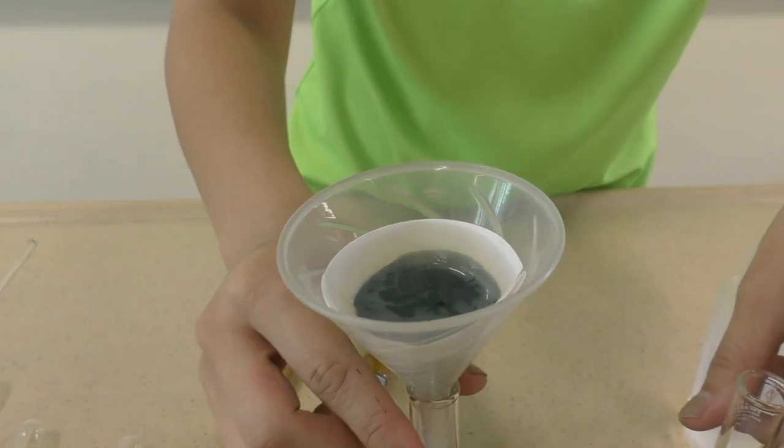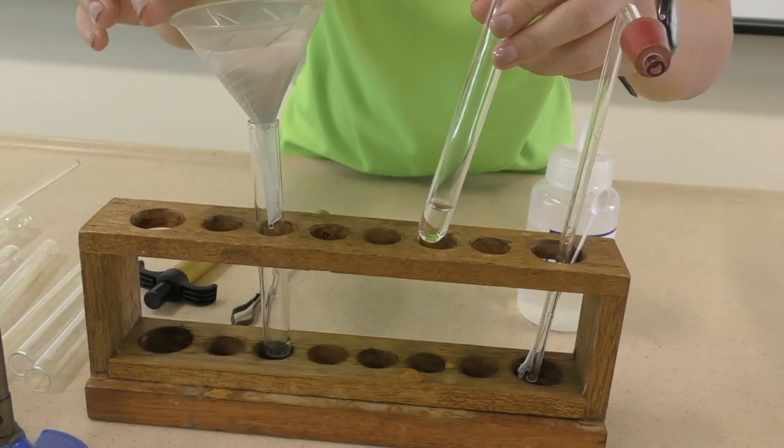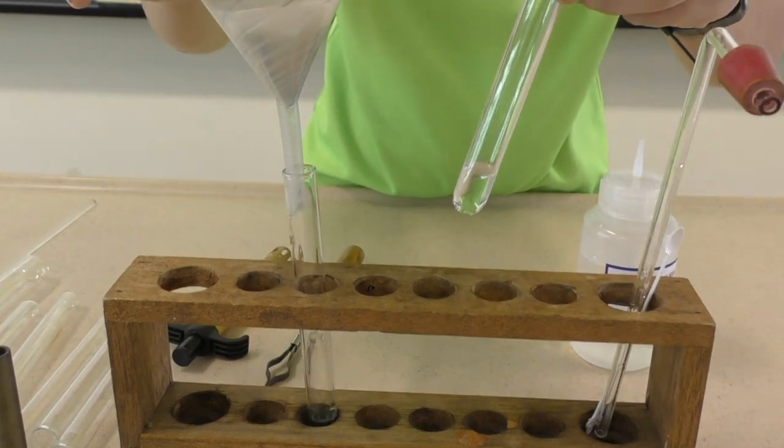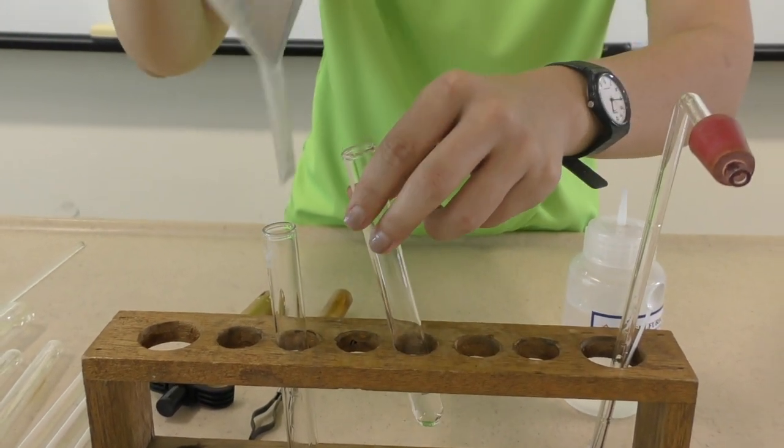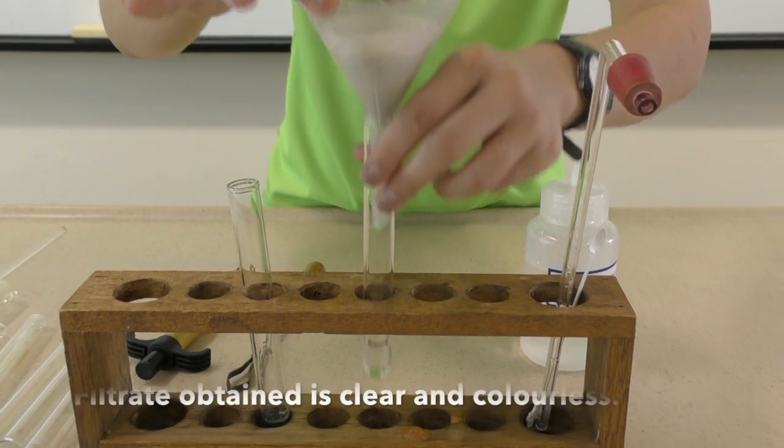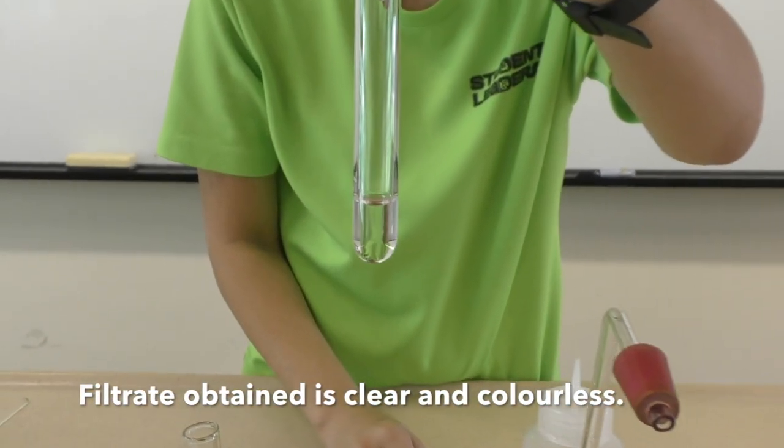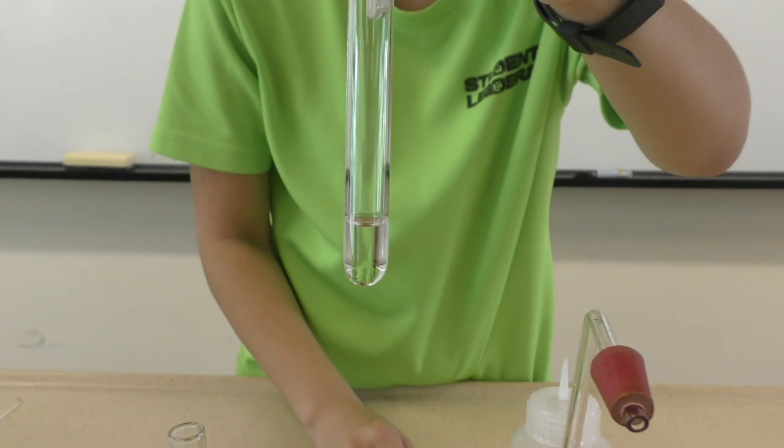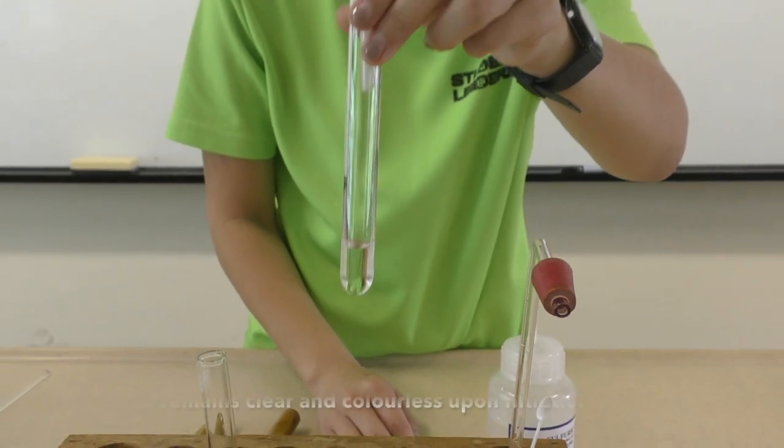Once the filtrate is running clear, move the funnel into the test tube containing the acid and allow the mixture to continue filtering. Always ensure that the filtrate is clear. Otherwise, repeat filtration.